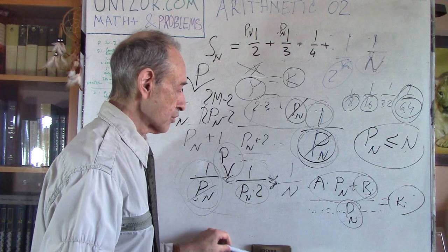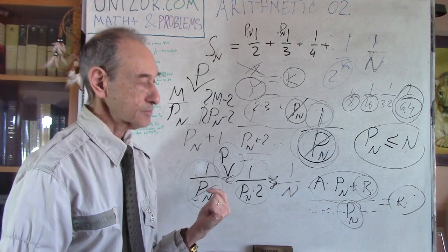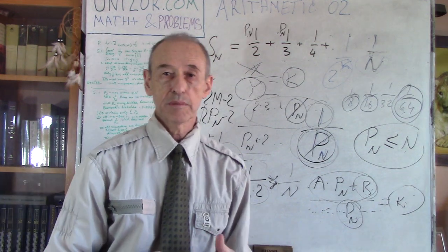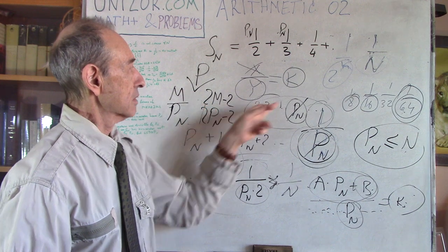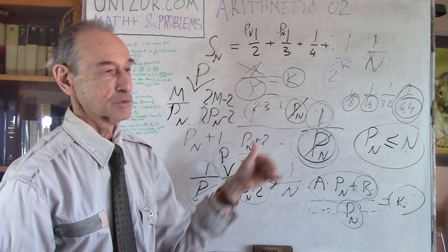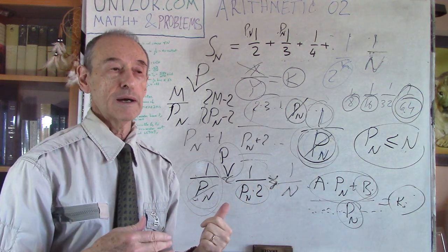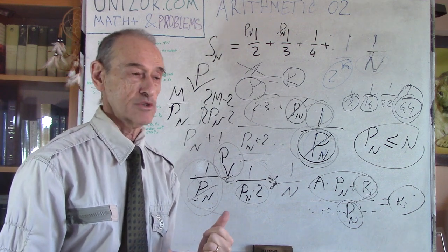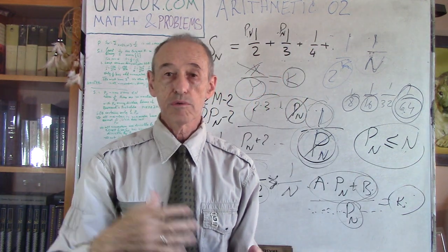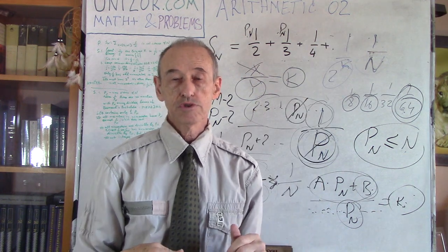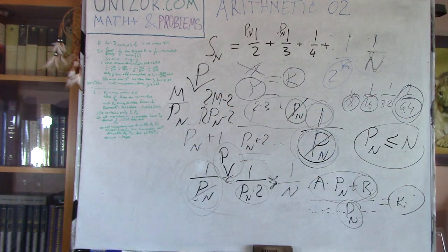I do suggest you read the notes for this lecture — they are more detailed and contain more precise information. I've given a very brief example of how to compute the least common denominator, but I've elaborated much more in the text for this lecture. To get to this lecture, go to Math Plus and Problems, choose Arithmetic, and this is the Arithmetic 02 lecture. Okay, that's it for today. Thank you very much and good luck!